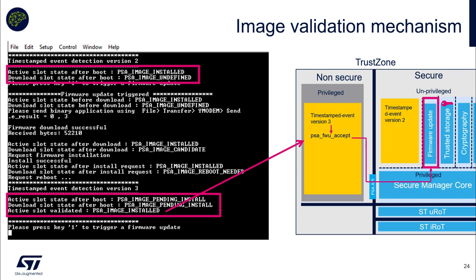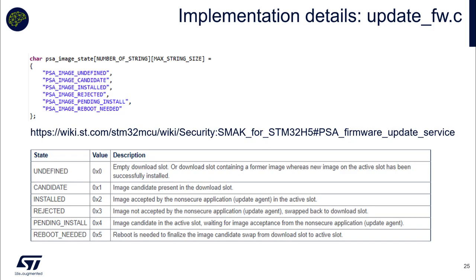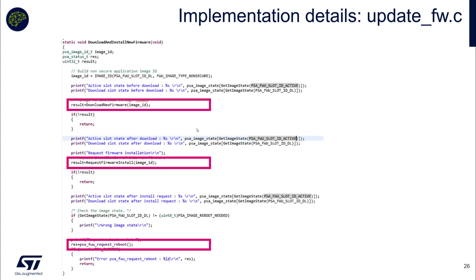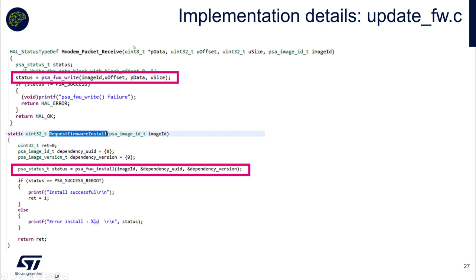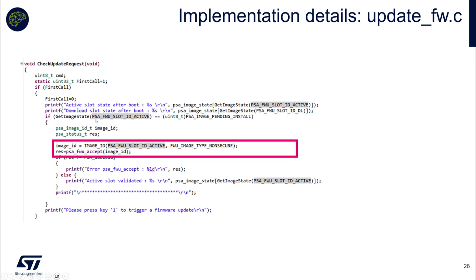For further details about these PSA APIs and information, you can check the implementation in update_firmware.c. The different slot status values are also defined in the wiki — this is really where you can find a lot of documentation about STM32H5 security, secure manager, and related topics. In update_firmware.c, the PSA APIs are quite simple. For accept: when I reboot and find that the active slot has something pending install, I automatically accept. So it's really straightforward here.